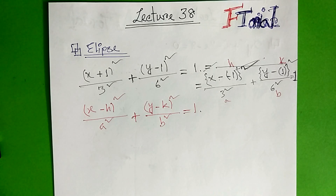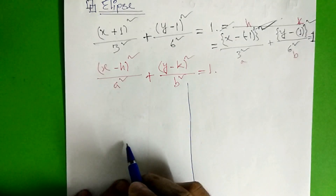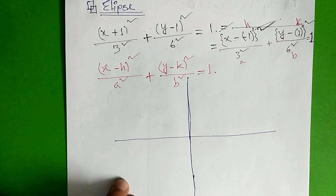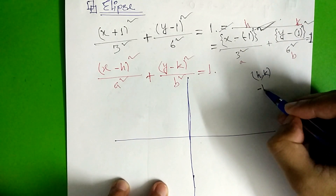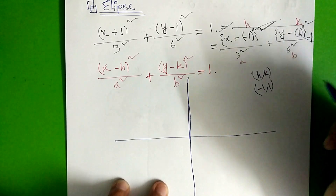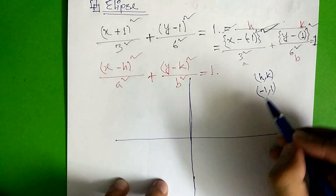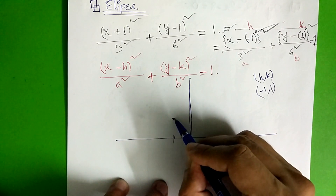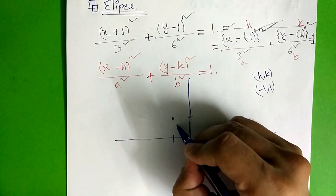So we can see the draw. The center point — h is the point. The h value is minus 1. So the center point is at minus 1, 1.